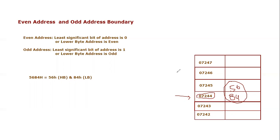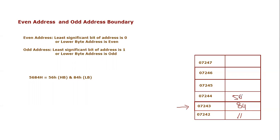Let's consider another example. Let's say we are storing 5684 again, and we are storing information at address 07243. We consider that information is already filled up to here. So now 84 will go at 07243 and 56 will go at 07244. Again, we will see the address of the information — it will always be considered from the lower byte. So the lower byte is stored at 07243, which is an odd number. So that is why this placement is known as odd address boundary. I hope you have understood the concept of odd address boundary as well.